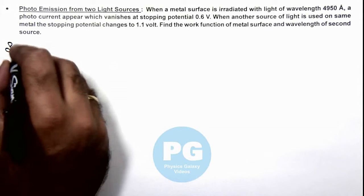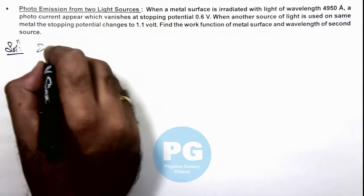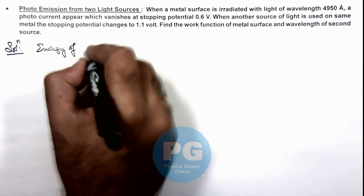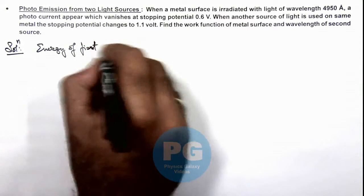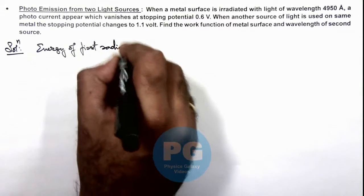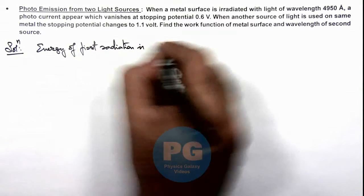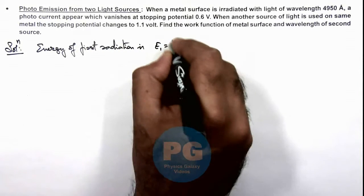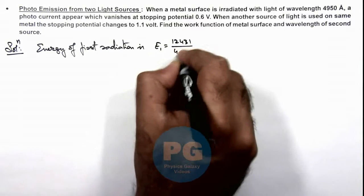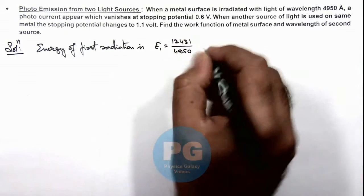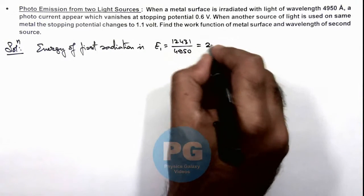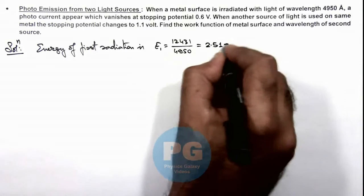In solution, we can write the energy of first radiation as E₁ = 12431/4950, directly in electron volts, which gives us 2.51 electron volts.